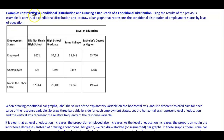In this next example, we're going to use StatCrunch to construct a conditional distribution and to draw a bar graph of the conditional distribution. We're going to use the information that we had from the previous example and enter it into StatCrunch.